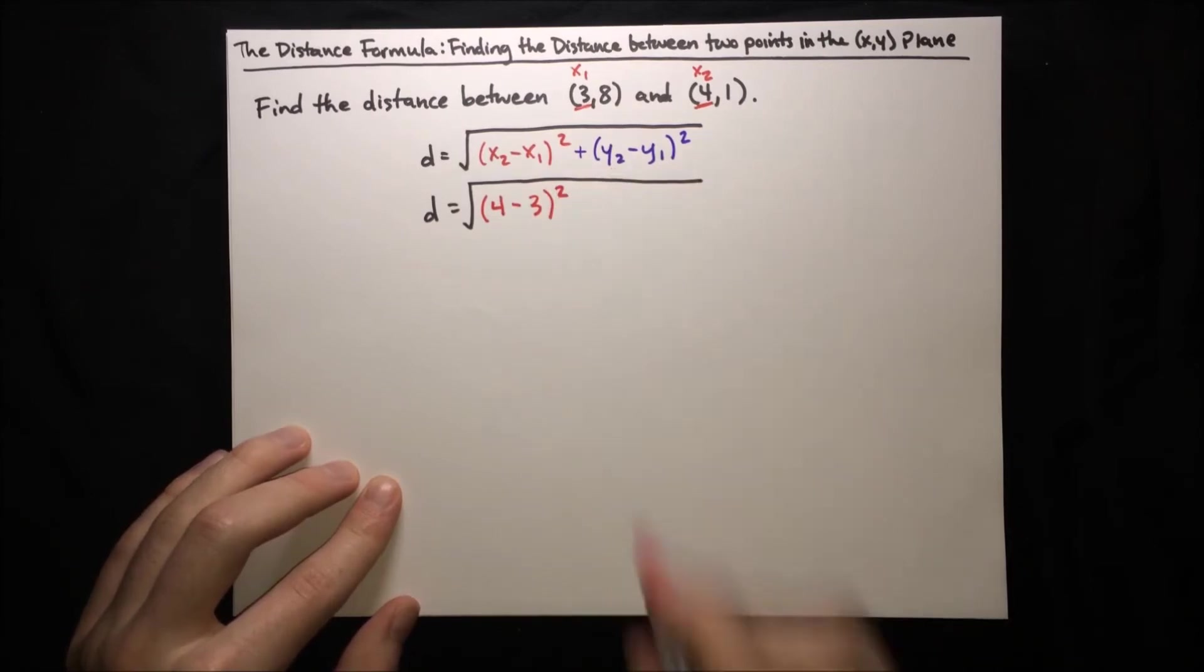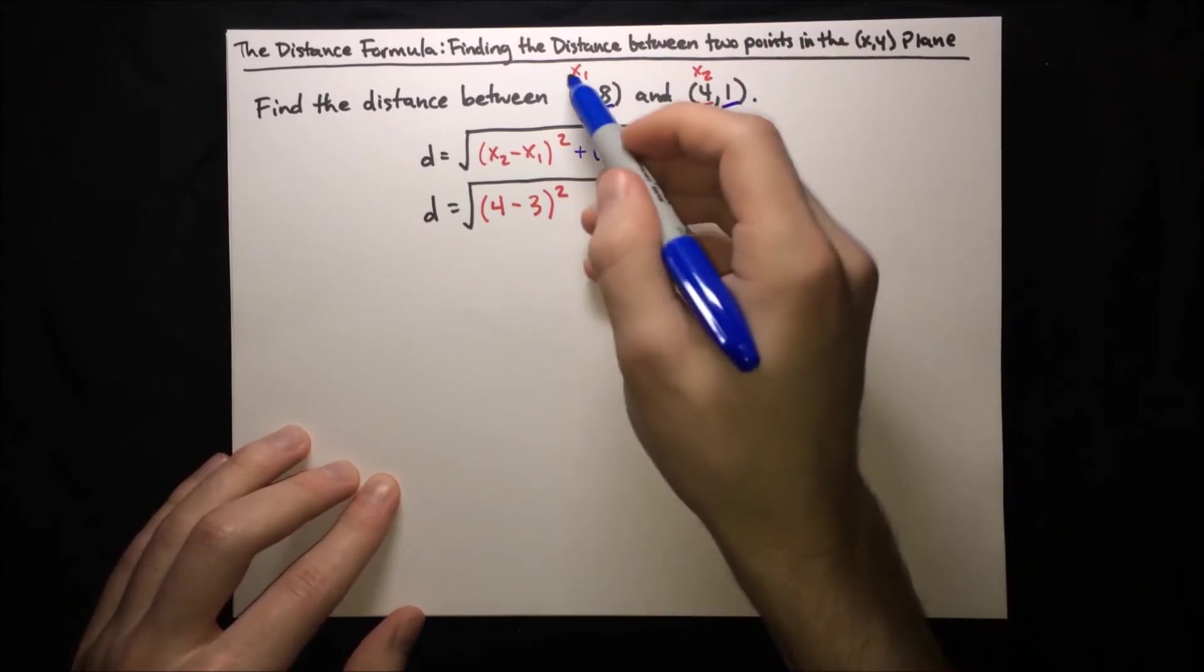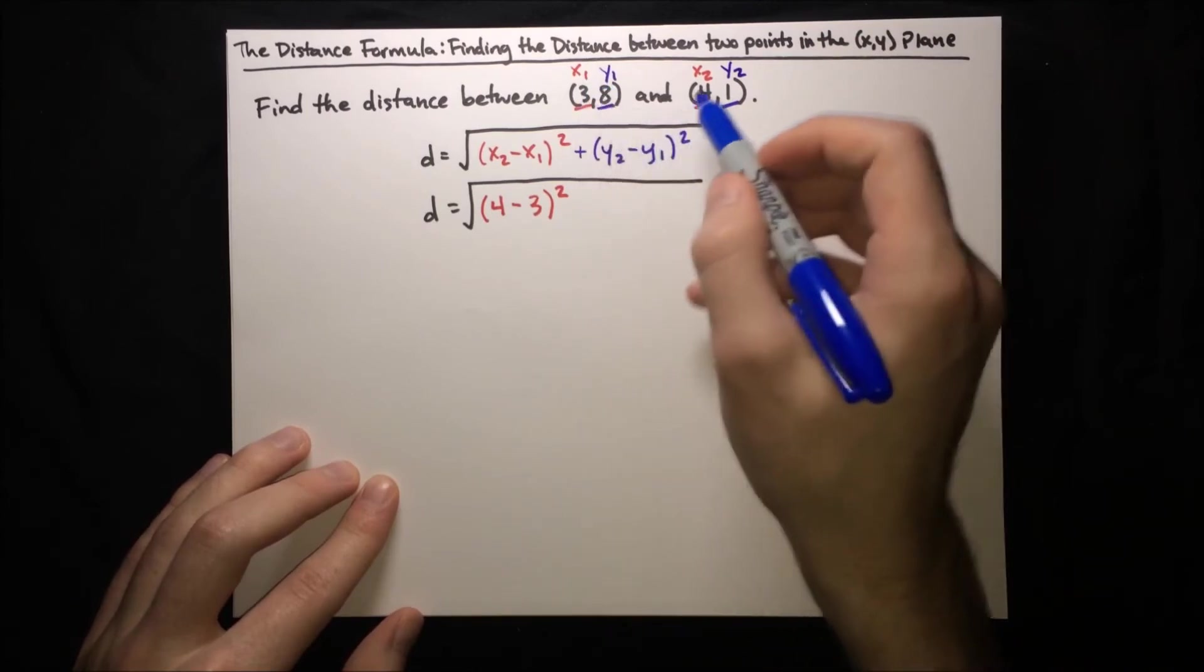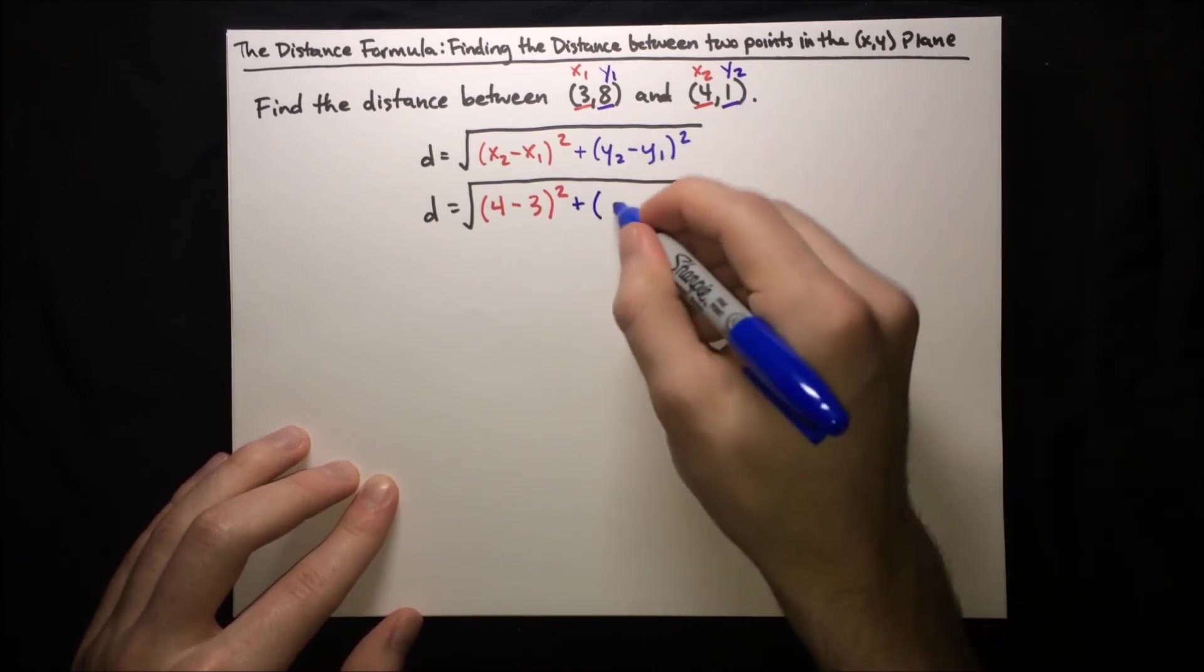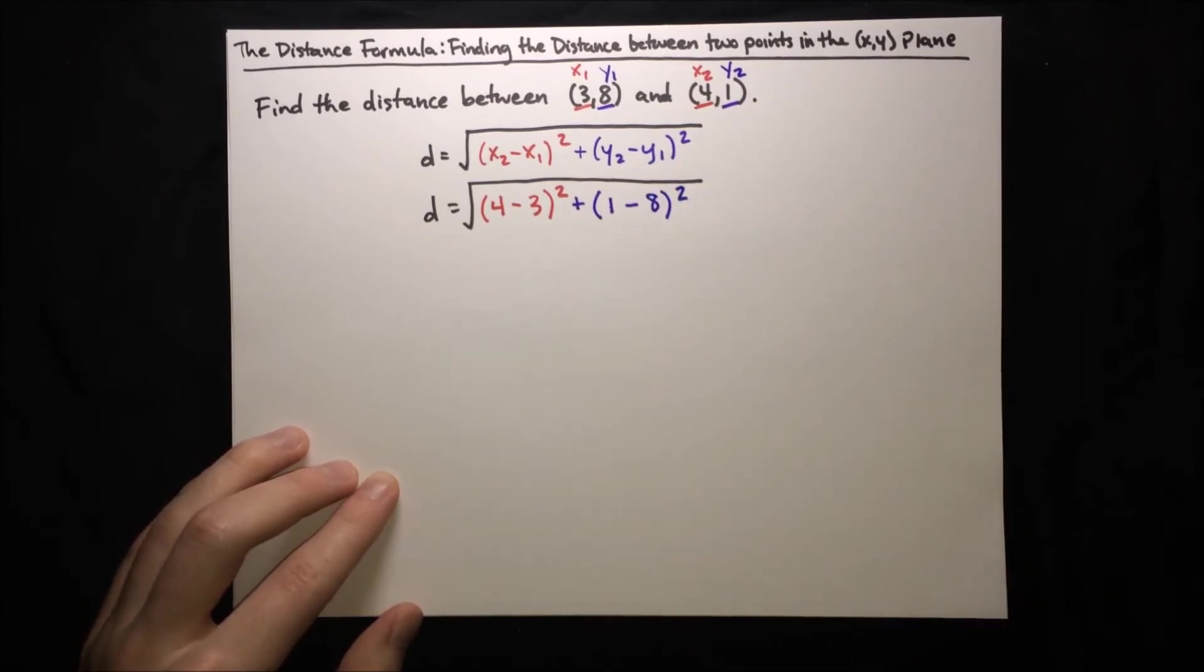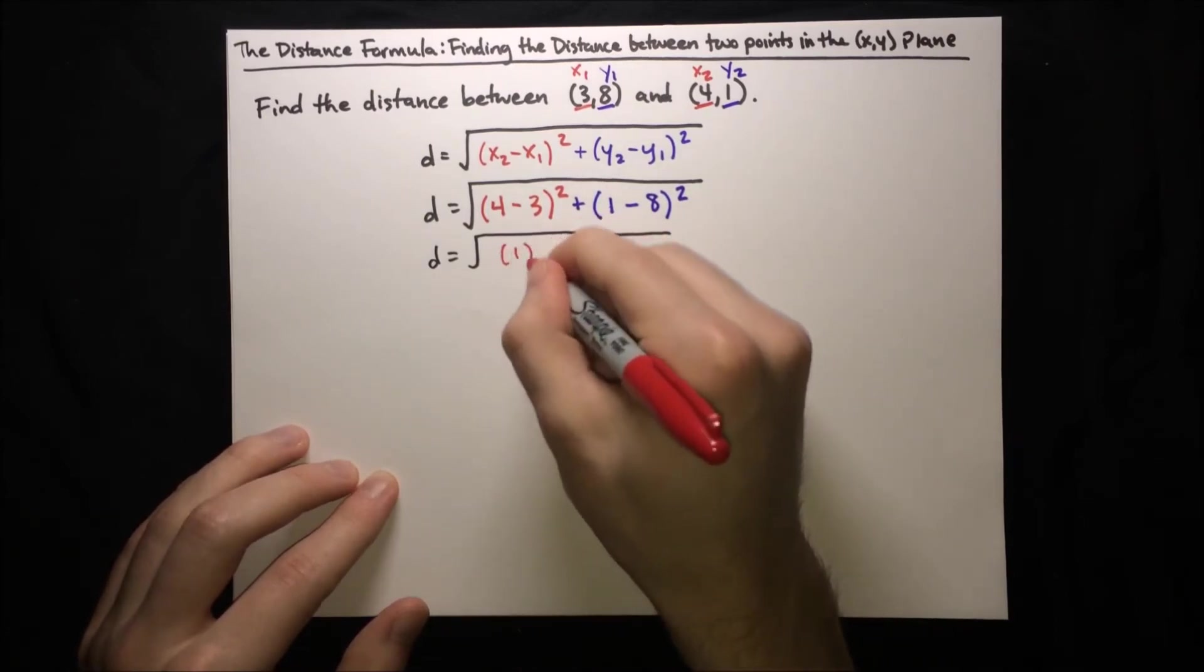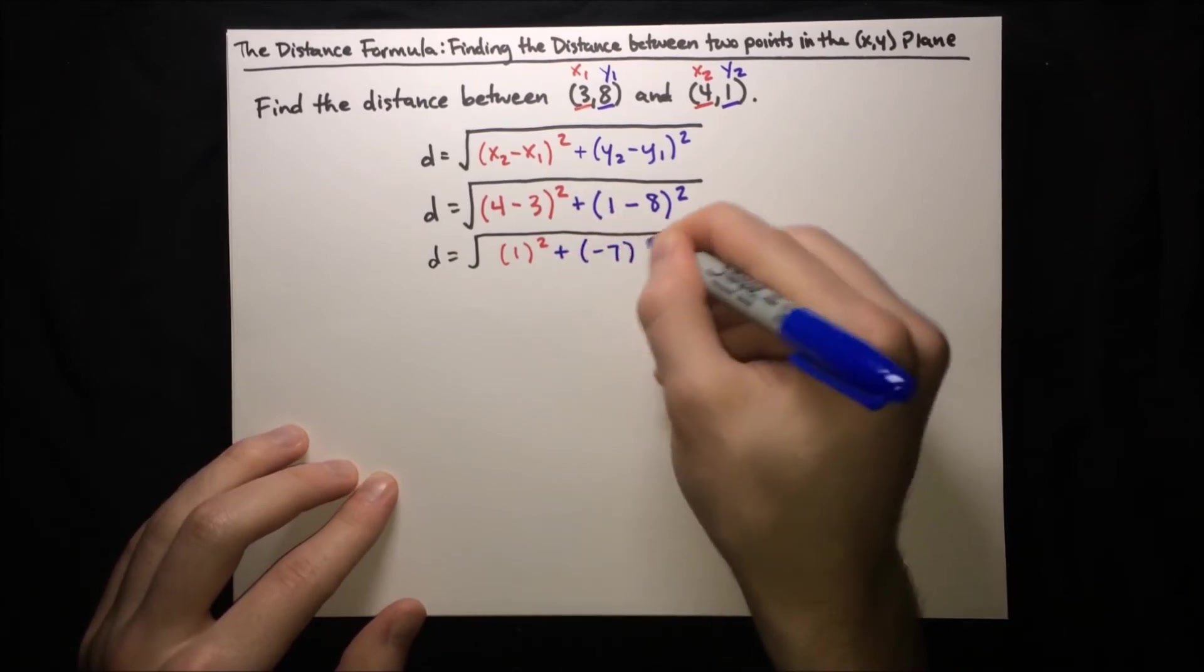And then for the y coordinates, we'll look at the second coordinates, 8 and 1. And since this is x₁, this needs to be y₁. And since this is x₂, this needs to be y₂. We've got to keep the x₁, y₁ together, and we've got to keep the x₂, y₂ together. So now we'll just plug that in, y₂ is 1, minus y₁ is 8, and squared. And now it just comes down to computing what's inside of the root. So let's do that, d equals square root of 4 minus 3 is 1, and we're going to square that. And then 1 minus 8 is negative 7, we're going to square that.